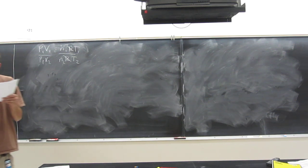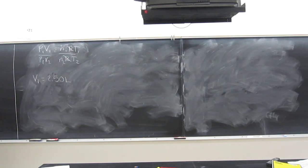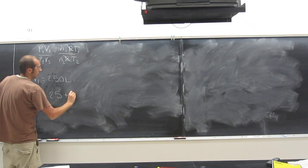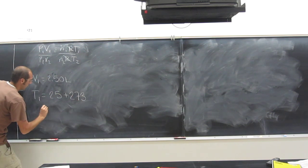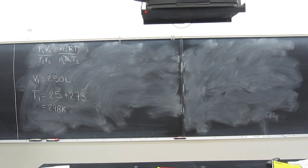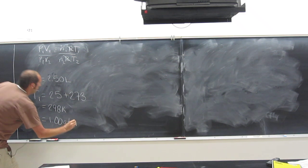Do we know any of these things? We know V1, V1 is 2.50 liters and the units we want them in, liters is a good unit for us. T1 we know, that's 25 degrees Celsius plus 273, 298 Kelvin. We know P1, right, 1.00 atm.